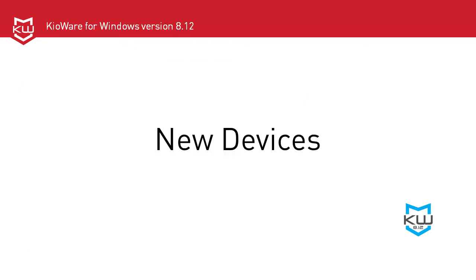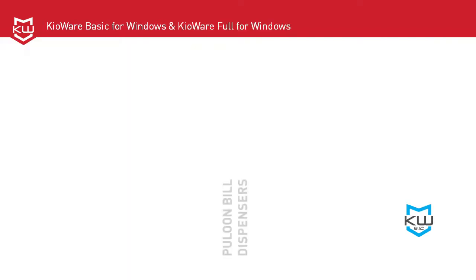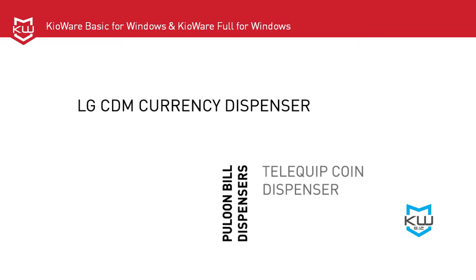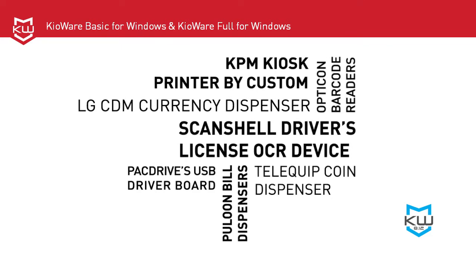The robust list of new devices added to KeyWare Basic for Windows and KeyWare Full for Windows is particularly noteworthy. New devices include multiple Puloon bill dispensers, an LG CDM currency dispenser, Telequip coin dispensers, Opticon barcode readers, PAC drives, and USB driver board.